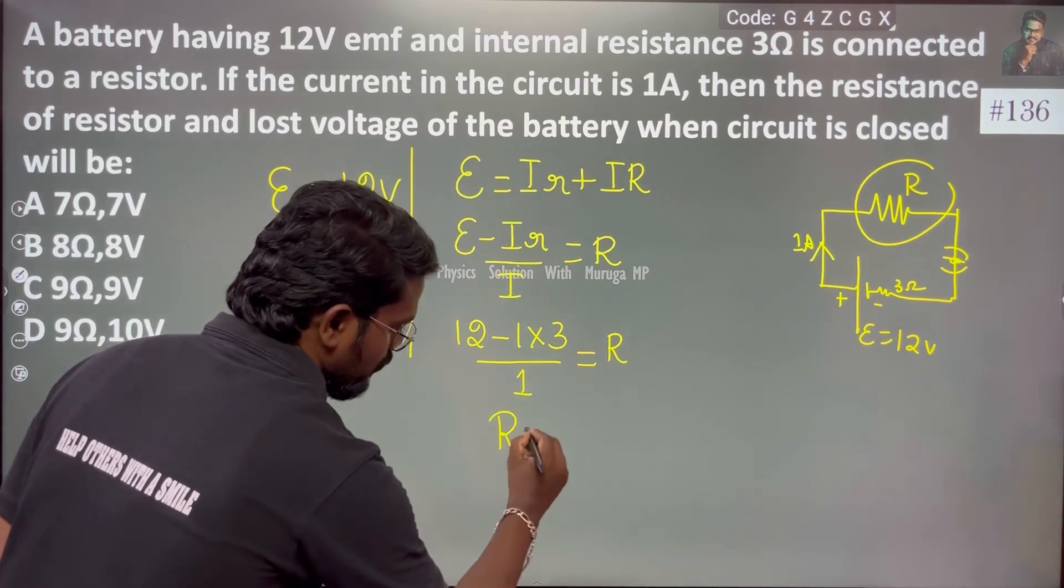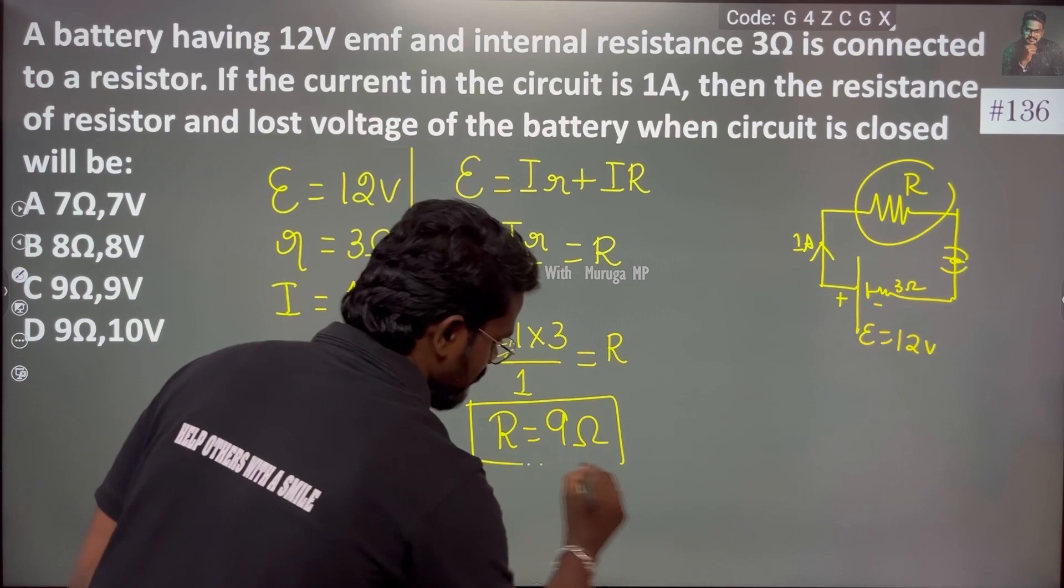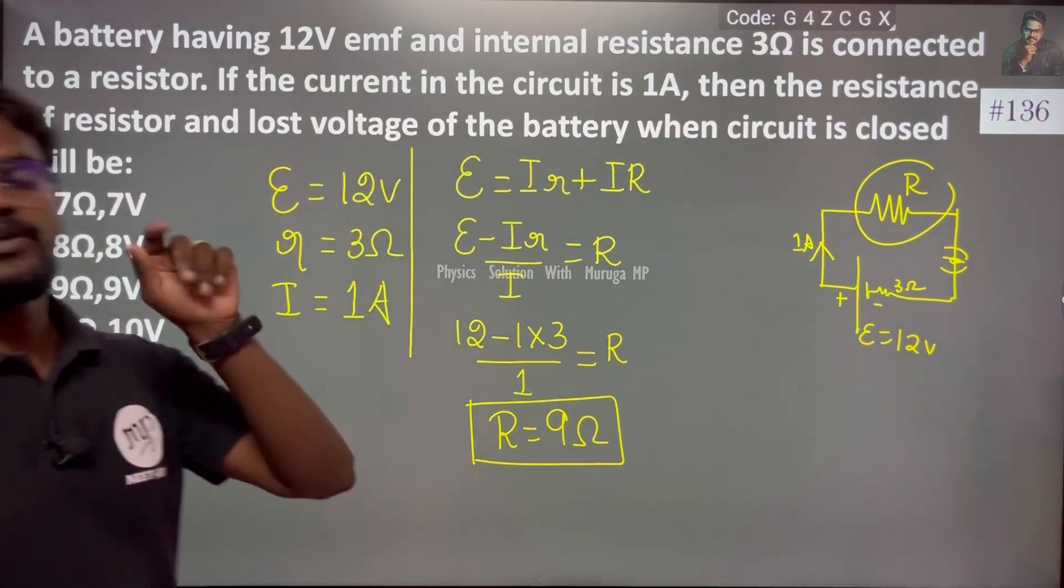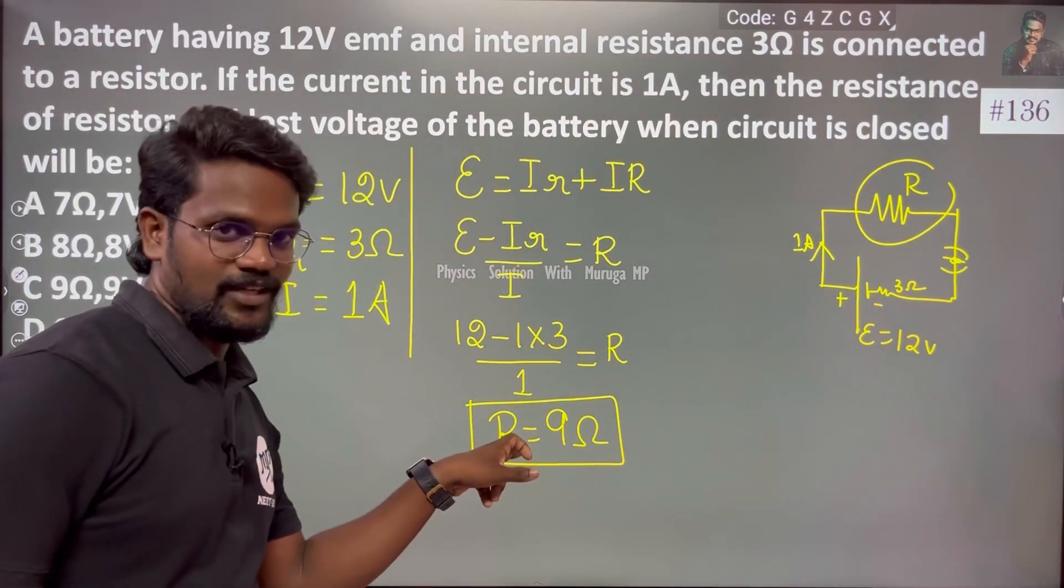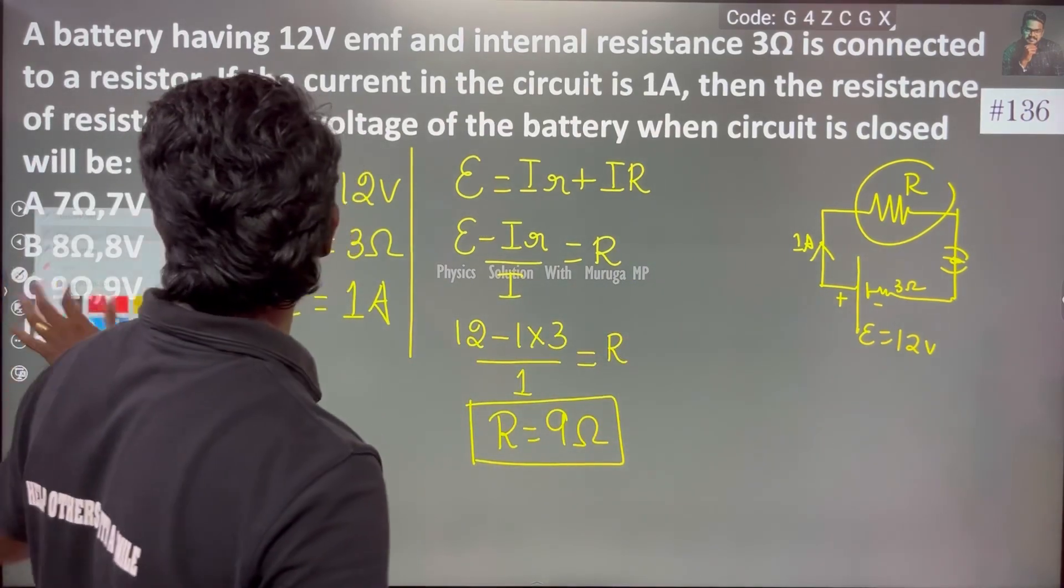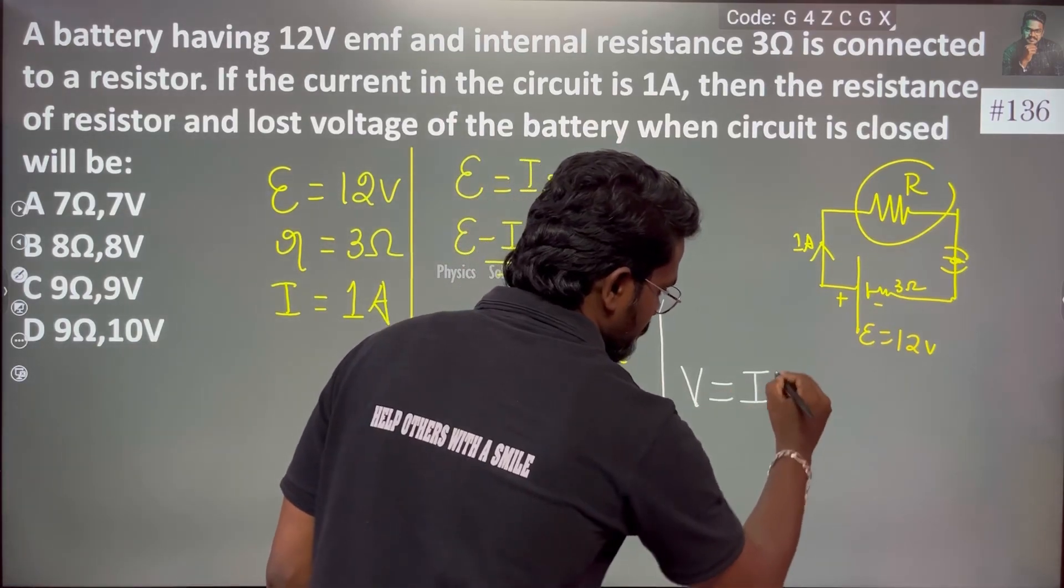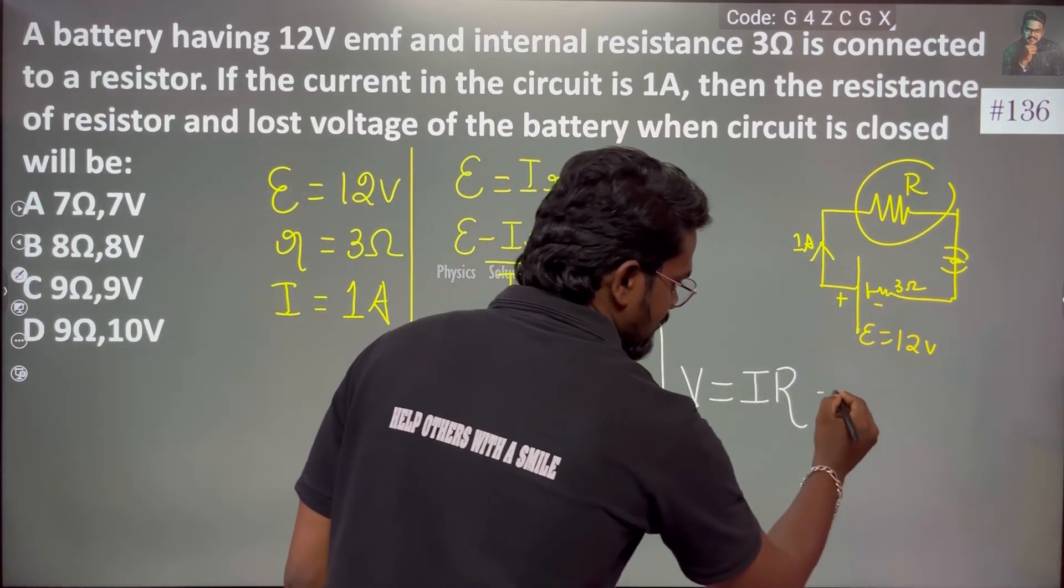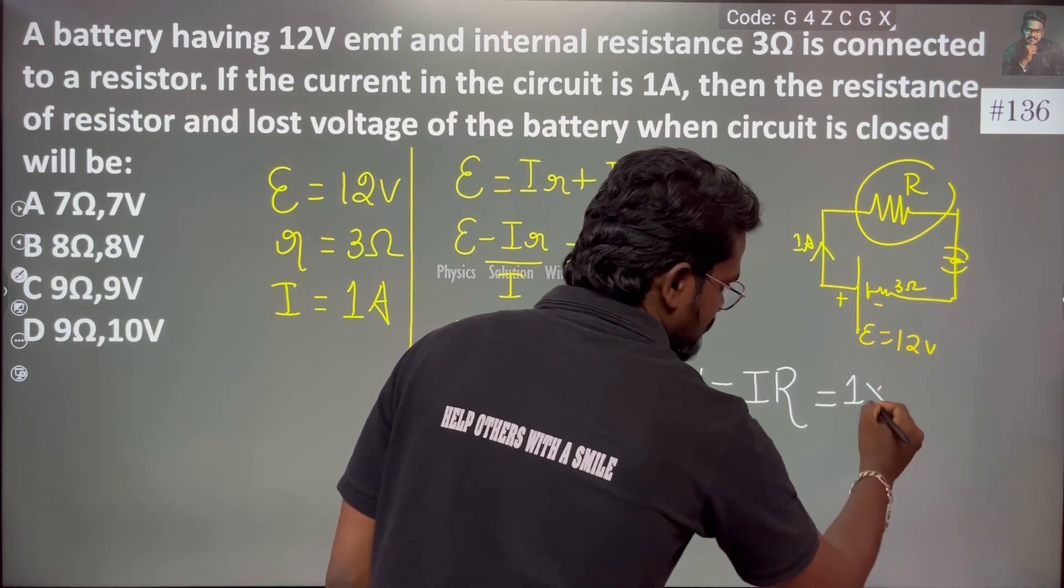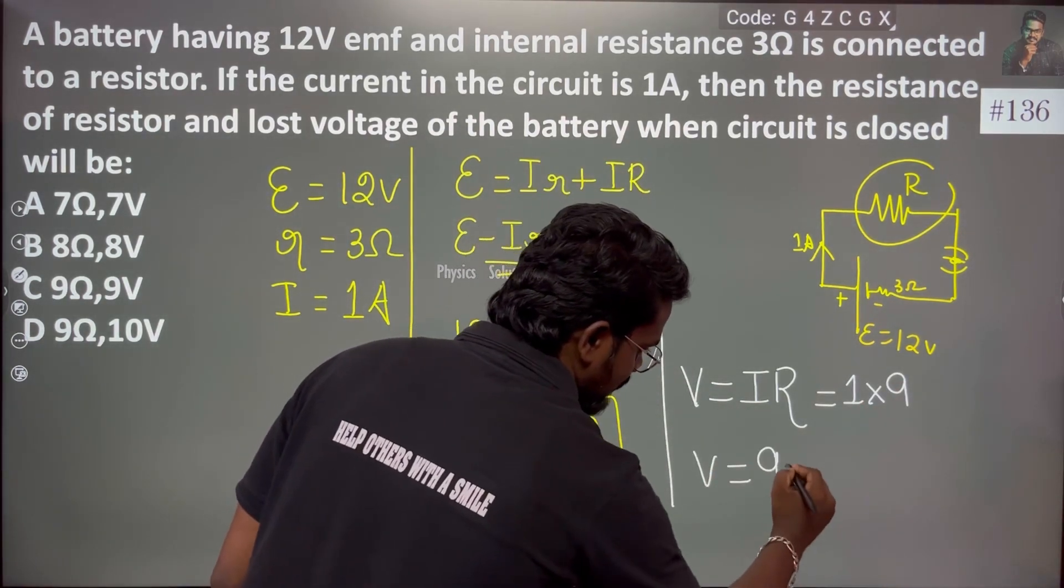R is 9 ohms. First we get the resistance. Now for voltage drop: V = I times R. Current is 1, resistance is 9, so V = 9 volts.